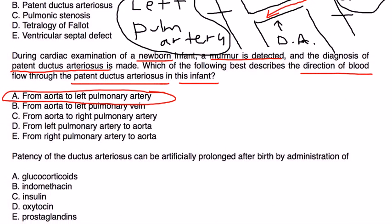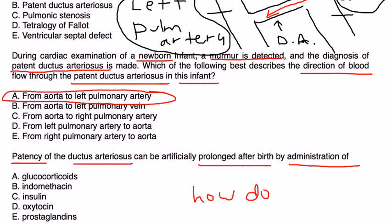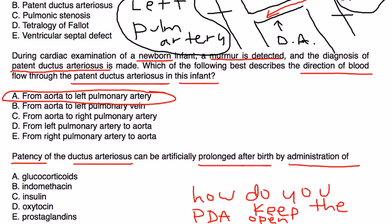Vignette 3: Patency of the ductus arteriosus can be artificially prolonged after birth by administration of — what? In certain heart anomalies you may actually need to keep the PDA open. You keep it open with prostaglandins, and you would close it with indomethacin.